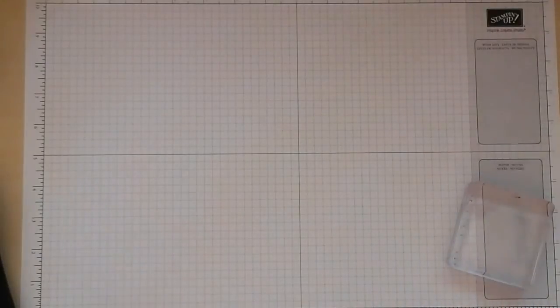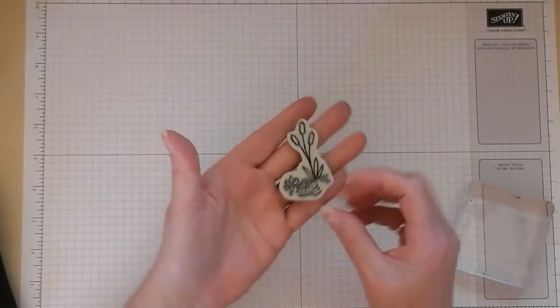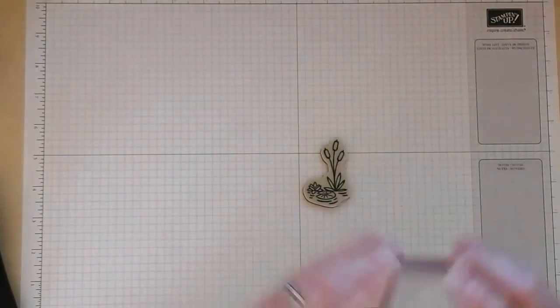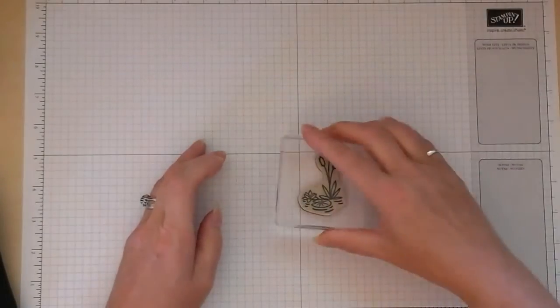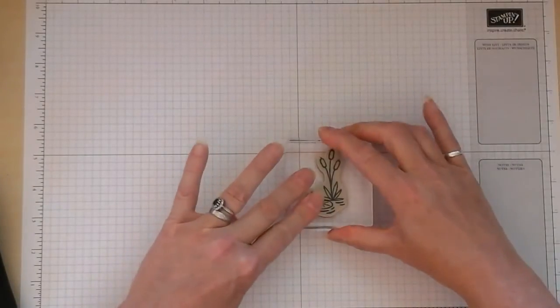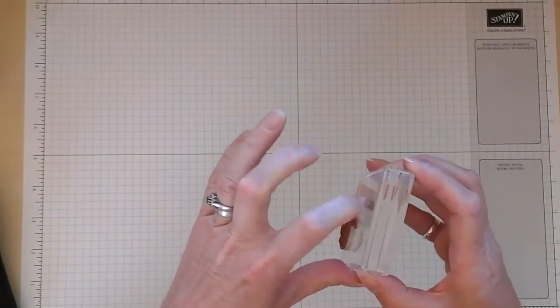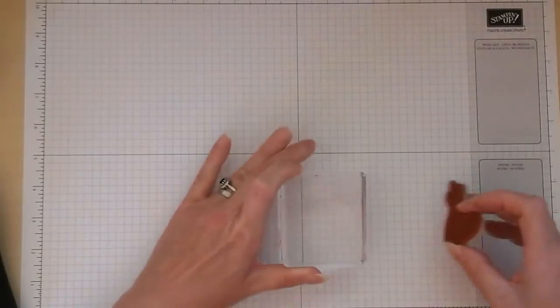Okay so I have the image that I want. It's this pretty little bulrushes image and I like to keep the imaging sheet on the stamp so I'm just going to use my acrylic block to pick it up. Now as you can see the block's a little bit grubby and the stamp doesn't really stick very well.